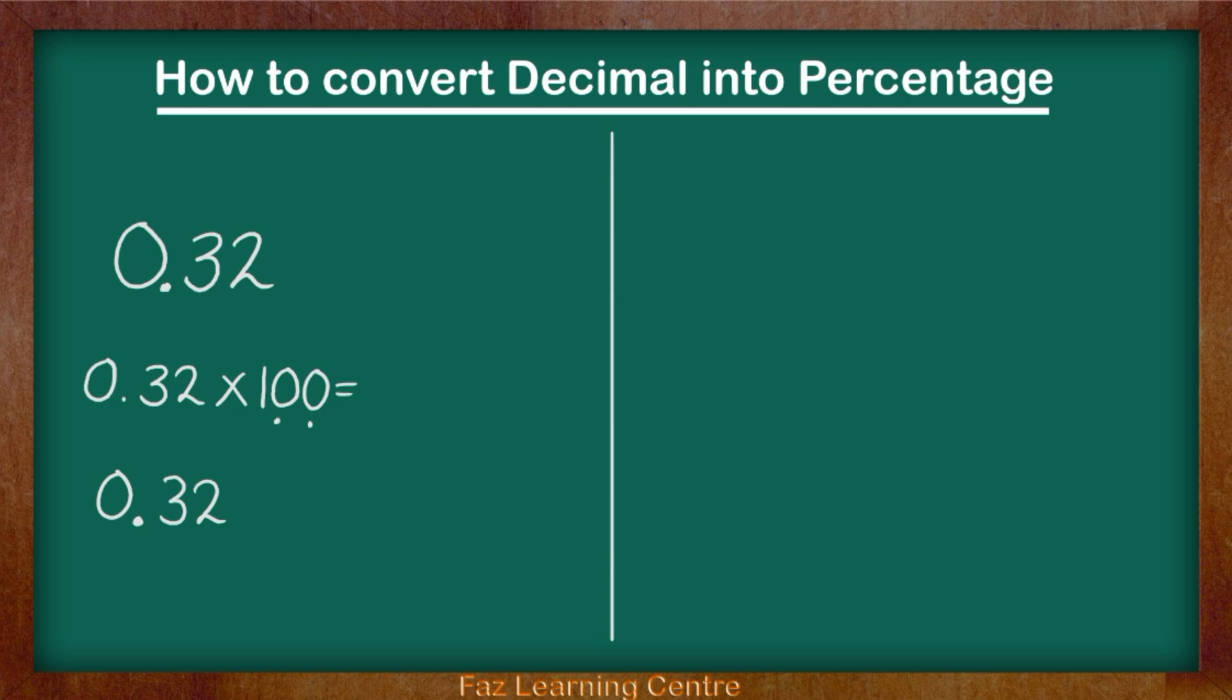I am going to move my decimal towards the right two times as I have two zeros. One, two.